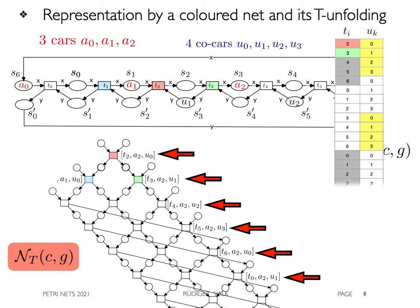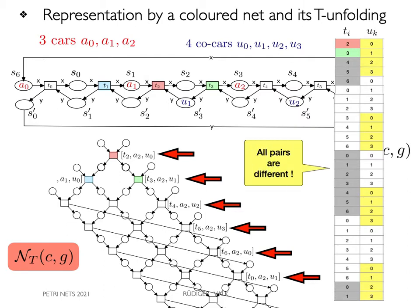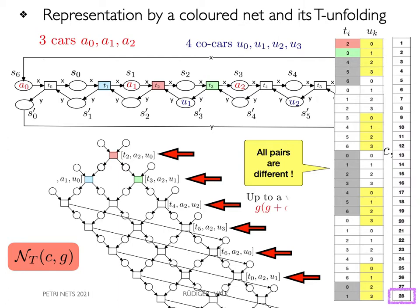They continue like this and are all different. In the middle of the identifiers, we have 28 entries. This value of g times g plus c equals 28 is known from cycloid theory.